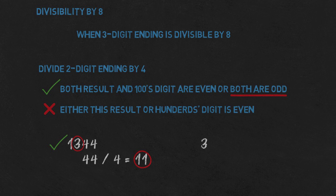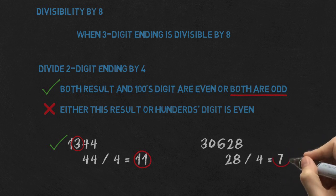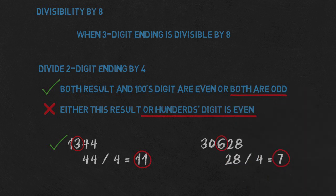Second example: 30,628. 28 divided by 4 is 7, which is odd. And we have 600, so the hundreds digit gives us 6 — even. One is odd, one is even, so 30,628 is not divisible by 8. Of course, if the two-digit ending is not divisible by 4, then the whole number is not divisible by 4 or 8.